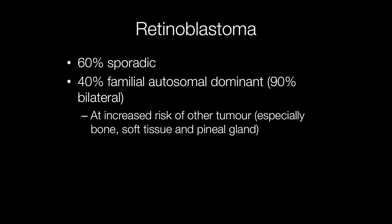60% of retinoblastomas arise sporadically and 40% have a familial autosomal dominant inheritance; in these cases 90% are bilateral. Patients with familial retinoblastoma are at increased risk of other malignancies, including tumours of the bone, soft tissue, and pineal gland.